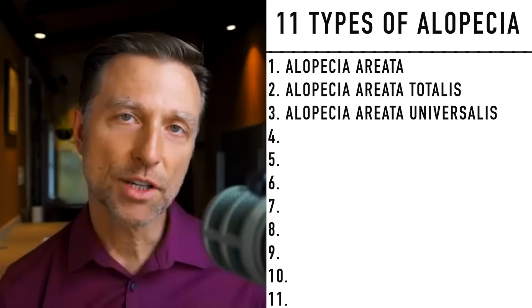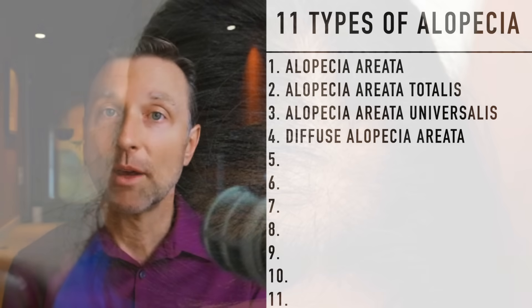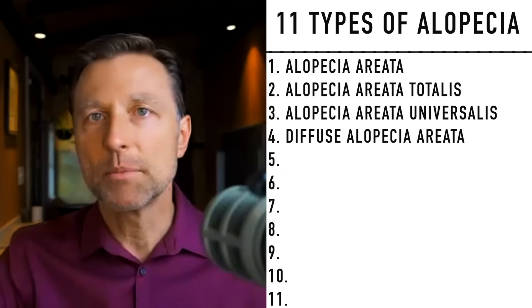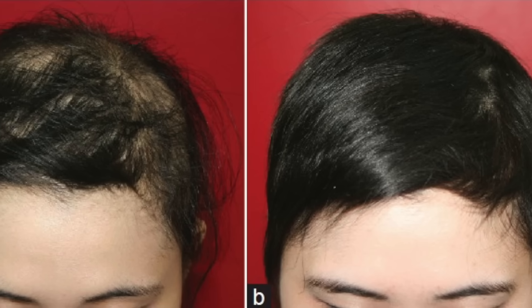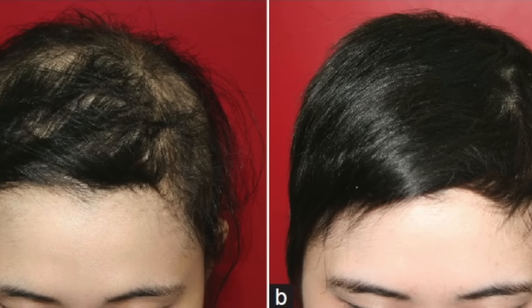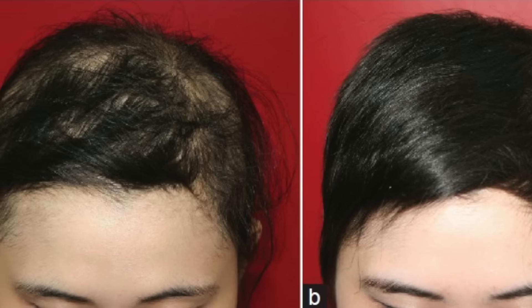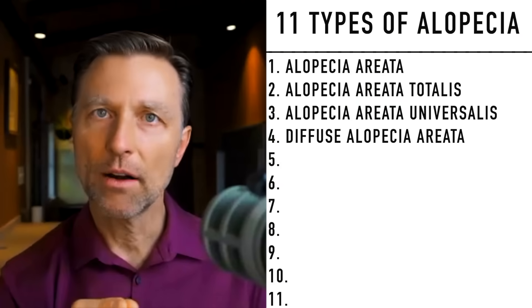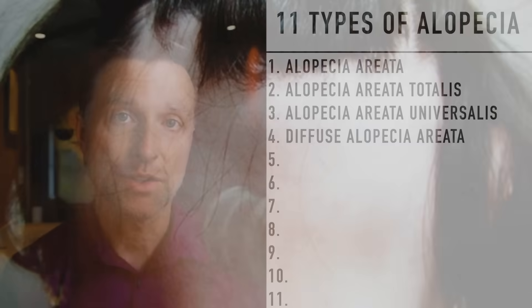The next type is called diffuse alopecia areata, sometimes referred to as incognita. In this diffuse type, instead of having distinct patches of hair loss, you have areas that are very, very thin. The hair follicles become extremely thin, and it looks like there are some patches throughout the scalp.